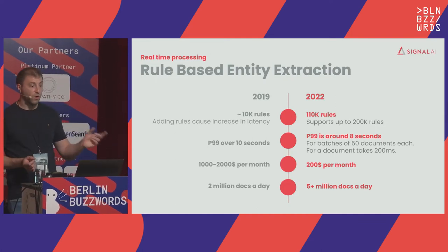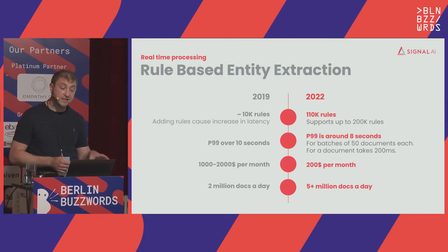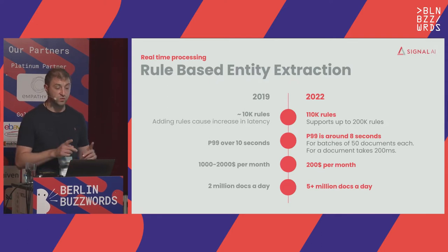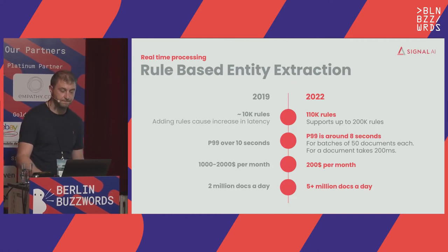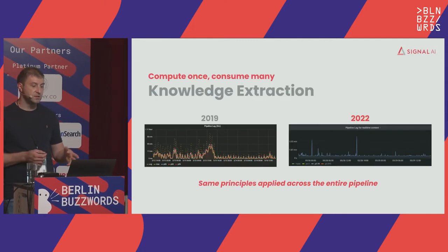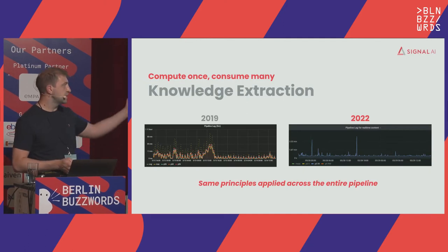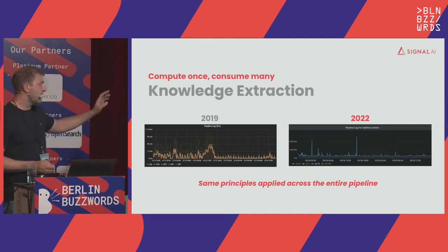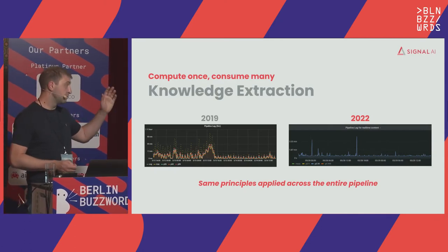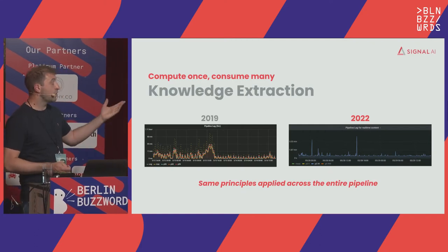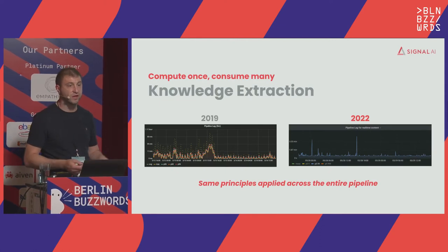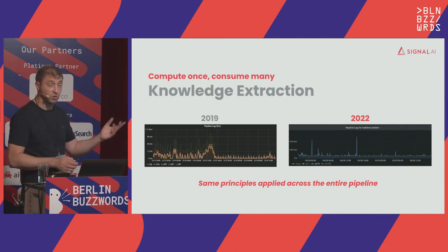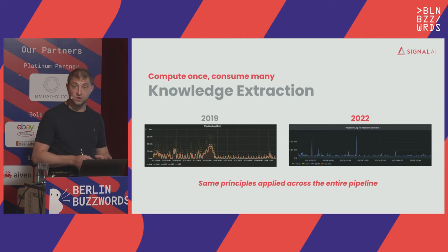The P99 reduced as well — it's around 8 seconds, but the key difference is that it was 10 seconds for one document and now it's 8 seconds for 50 documents. So at the document level we are processing each document in about 200 milliseconds. Applying the same principles across the entire pipeline: if before we had spikes going over 5 to 10 minutes multiple times, our P99 is now between 30 and 40 seconds. There are always spikes — they are inevitable — but in our context a couple of delayed documents doesn't matter too much.